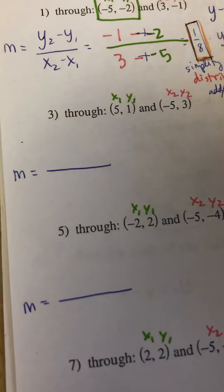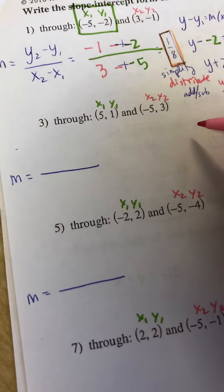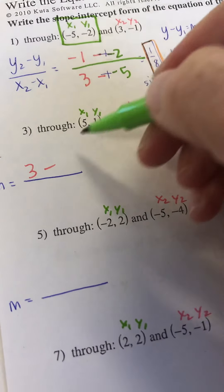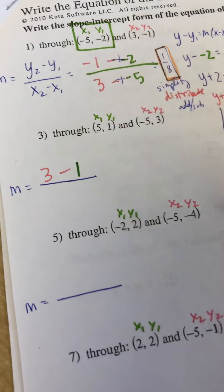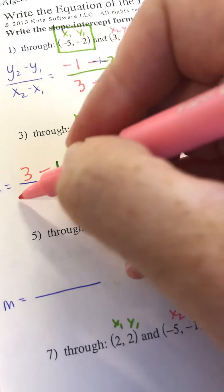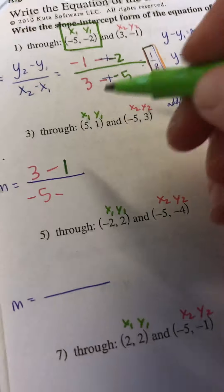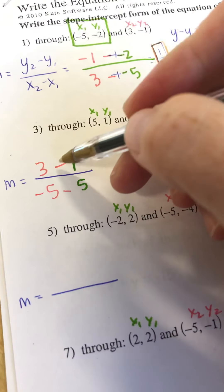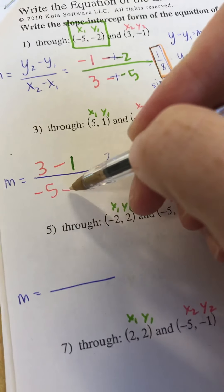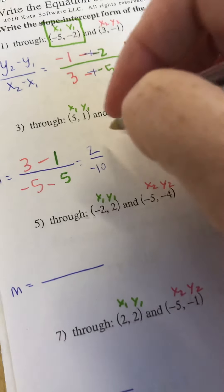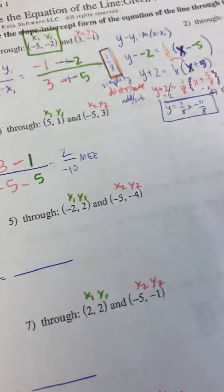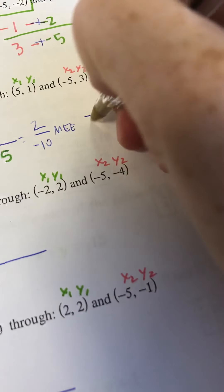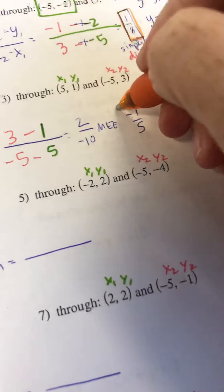Let's work through another example. I've got them color coded. My y2 is 3, minus my y1, which is 1 — so y2 minus y1. My x2 is negative 5, minus my x1, which is 5. So we get 3 minus 1 is 2, and negative 5 minus 5 is negative 10. You can hit math, enter on your calculator, or divide each by 2 to simplify, giving us negative 1 fifth. That's my slope — that's what m stands for.